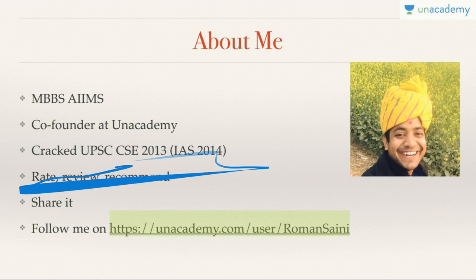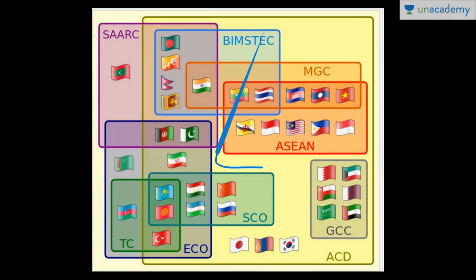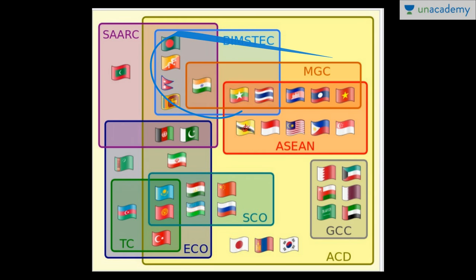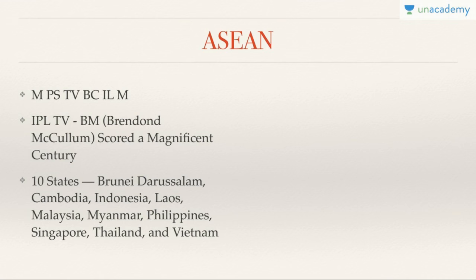This is a diagram available on Wikipedia. You can see these are the BIMSTEC members, this is ASEAN, this is the Gulf Cooperation Council, this is Shanghai, and this is SAARC. It's called an Euler diagram, so you can just go to Wikipedia and see this.